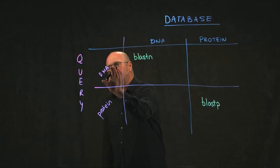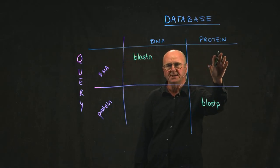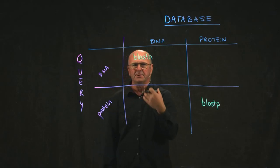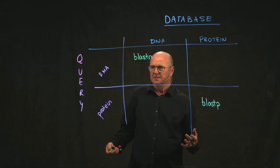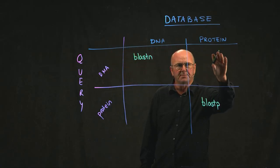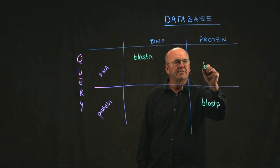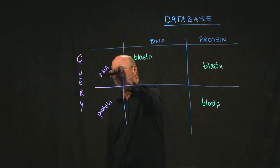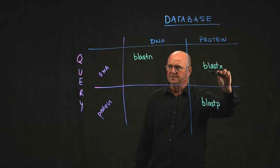If we have a DNA query and we want to compare it to a protein database, that means we have to translate all six reading frames of our DNA query, because we don't know which reading frame is the correct one. So we have to translate all six reading frames of our DNA query and then we can compare all of those six reading frames to our protein database. That algorithm is called BLASTX, but is obviously going to be much more computationally complex, because for each piece of your query, you're going to have six reading frames that you're going to have to compare against all of your database.